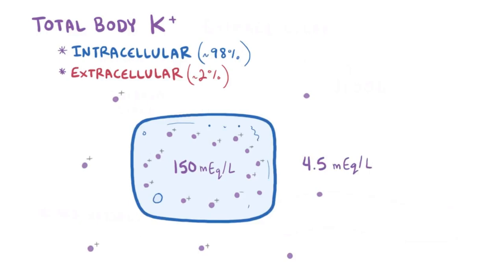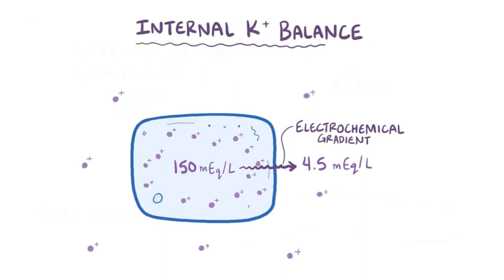Keep in mind that these potassium ions carry a charge, so the difference in concentration also leads to a difference in charge, which establishes an overall electrochemical gradient across the cell membrane. This is called the internal potassium balance. This balance is maintained by the sodium-potassium pump, which pumps two potassium ions in for every three sodium ions out, as well as potassium leak channels and inward rectifier channels that are scattered throughout the membrane.